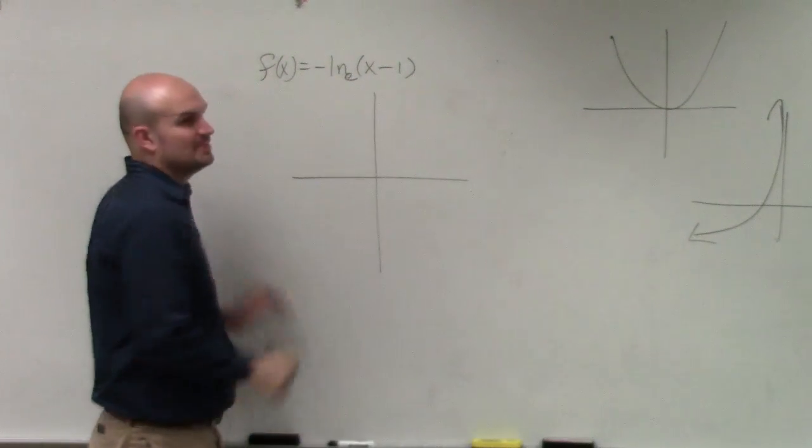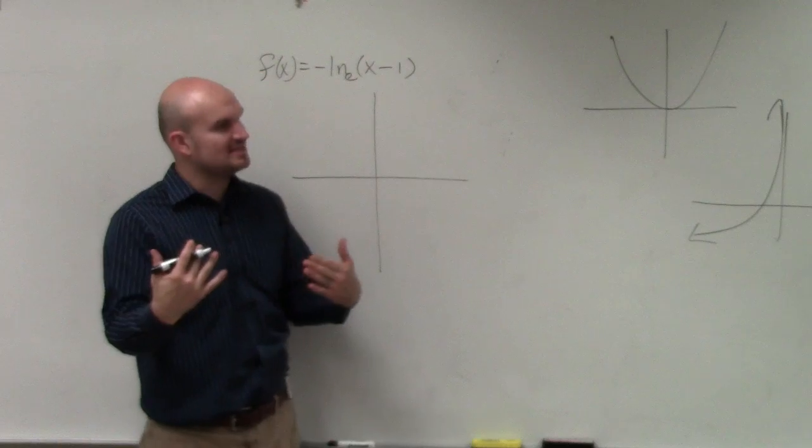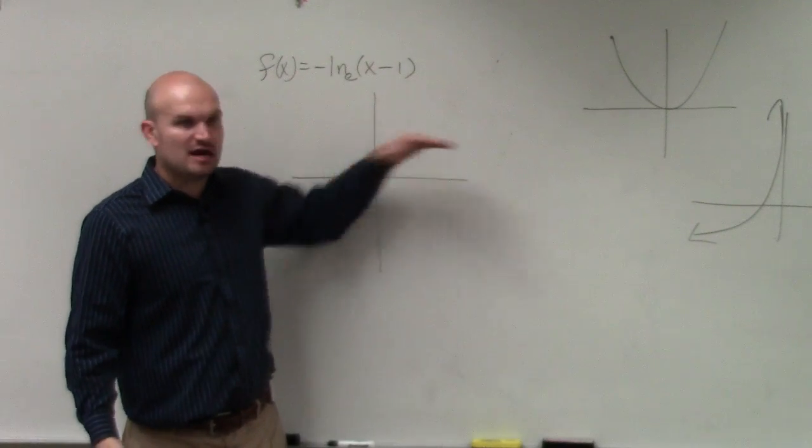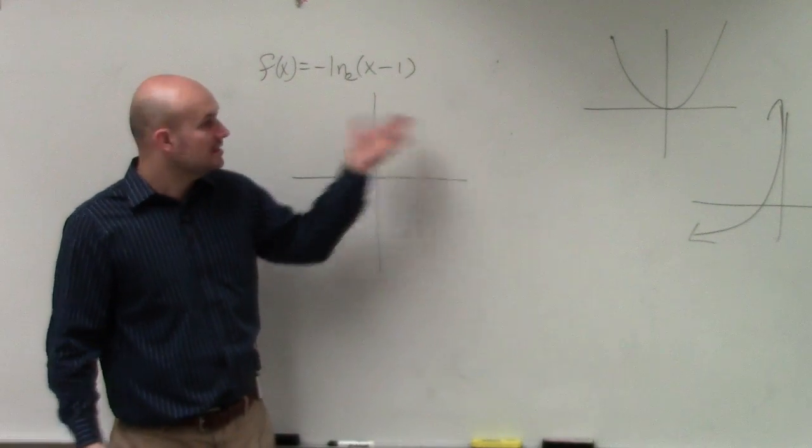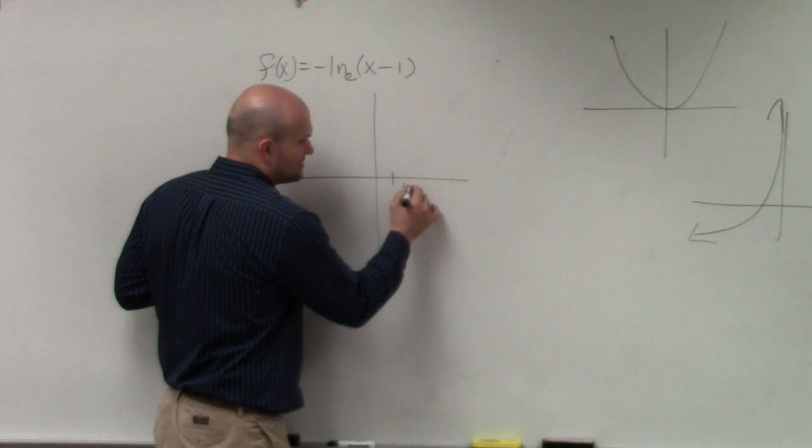Again, it doesn't matter what the base is. If you remember when we looked at Desmos, the base just tells you how sharp it is. It still crosses at 1 comma 0.